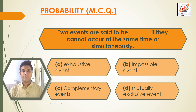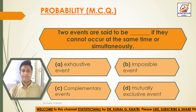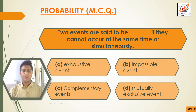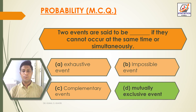Next question: two events are said to be dash if they cannot occur at the same time or simultaneously. Option A: objective event. Option B: impossible event. Option C: complementary events. Option D: mutually exclusive event. The answer is Option D — mutually exclusive event.